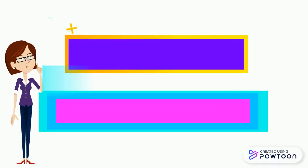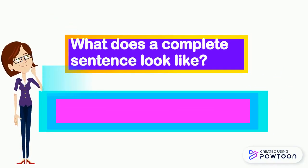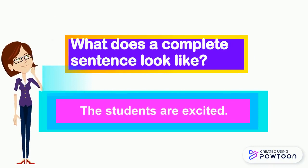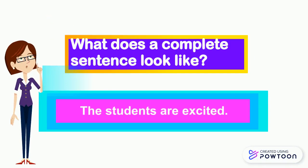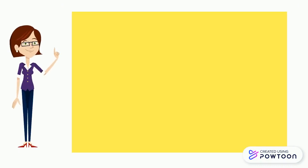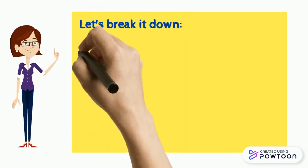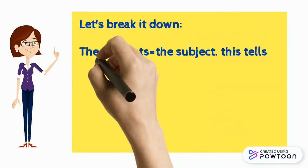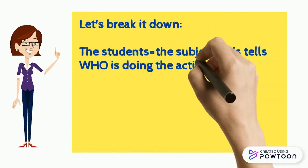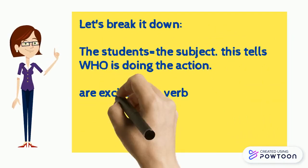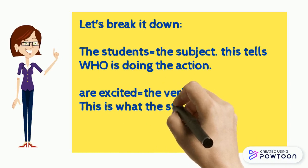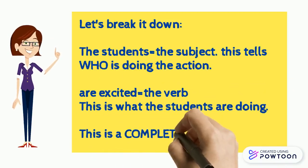Here's an example of a complete sentence: 'The students are excited.' Are you? 'The students' is the subject, 'are excited' is the verb, and it expresses a complete thought.